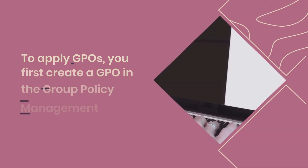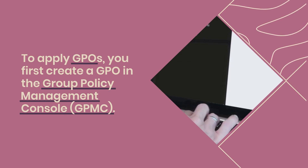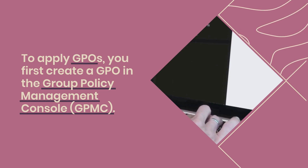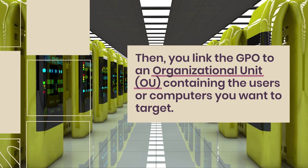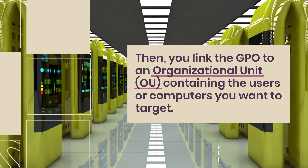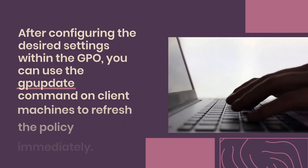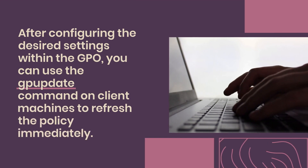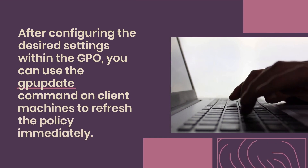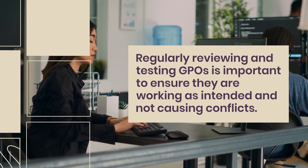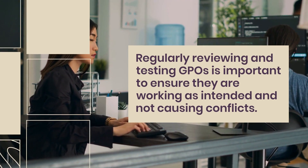To apply GPOs, you first create a GPO in the Group Policy Management Console, GPMC. Then you link the GPO to an organizational unit, OU, containing the users or computers you want to target. After configuring the desired settings within the GPO, you can use the GP update command on client machines to refresh the policy immediately. Regularly reviewing and testing GPOs is important to ensure they are working as intended and not causing conflicts.